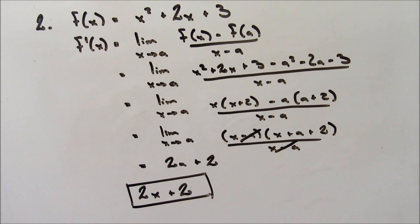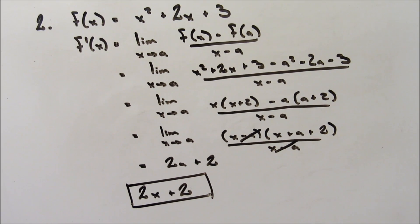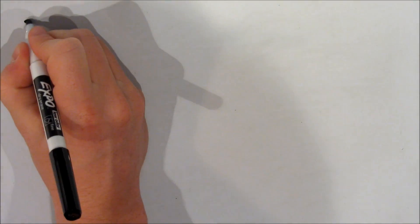And since a represents the value of the specific x coordinate that we're looking for, we're going to sub back in x to keep it general. But if we wanted to solve for the slope of the tangent at a specific point, we'd sub in the x coordinate of that point for a. For example, if our x coordinate was 3, we'd sub in 3 for a, and we would get 8.